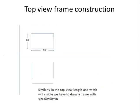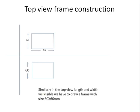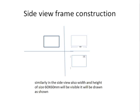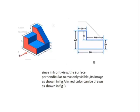Then the top view also has a 60×60 mm frame. In the top view, we have to draw the width and length of the object frame. Similarly, the side view frame will also have a 60×60 mm size.